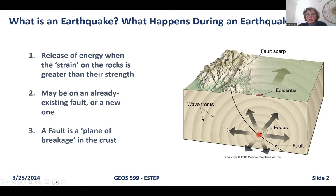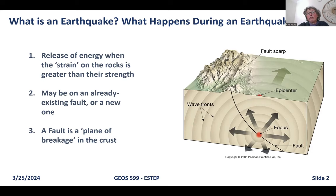A fault refers to a plane of breakage in the crust — not always a simple flat surface, often curved or slightly sinuous. In the diagram, the red dot labeled 'focus' is where the energy is released, and that energy moves out away from the focus in all directions as a series of waves. The term hypocenter is also used for focus. The point on the land surface immediately above the focus is called the epicenter — that's our usual frame of reference in earthquake reports. The fault scarp in the diagram identifies where the fault reaches the surface.